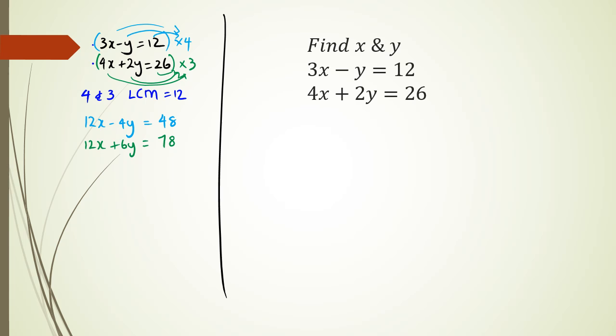And now I could actually subtract them. So 12x minus 12x is 0, negative 4y minus 6y is negative 10y, and 48 minus 78 is negative 30. So y equals negative 30 divided by negative 10, and y is equal to positive 3.